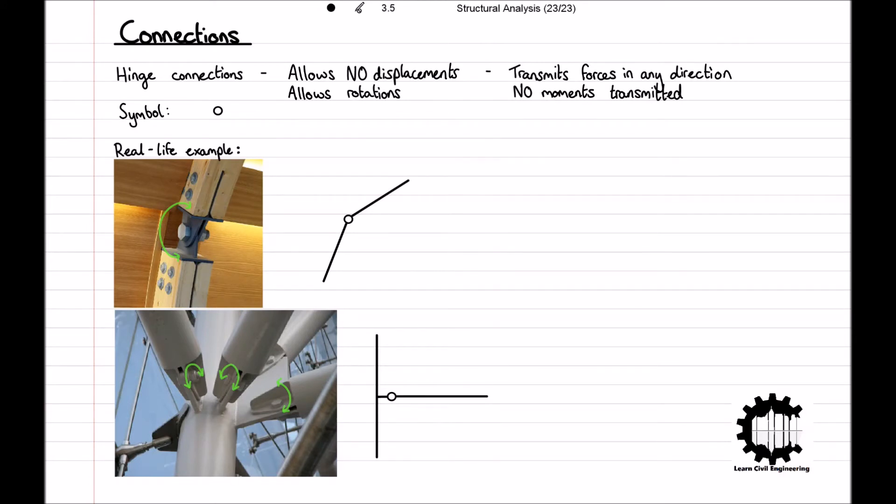And note here that the symbol is drawn slightly off from the column. If we were to draw the hinge at the intersection like this, it would indicate that two separate columns are being connected as well as the beam, which is not the case. So do keep this in mind when modelling structures with connections.